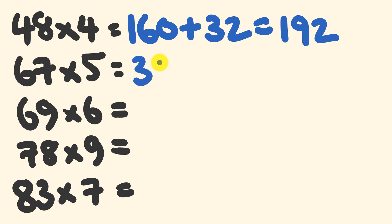60 times 5, 300. And to that, we're going to add 7 times 5, which is 35. Our answer, 335. 69 multiplied by 6.